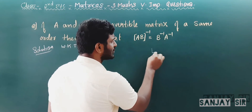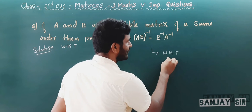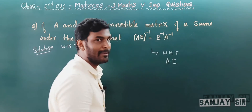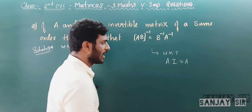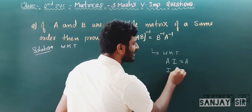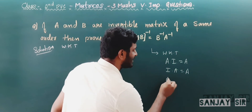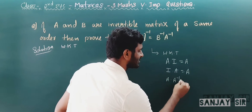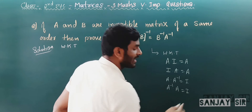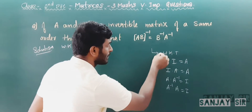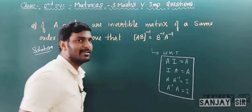Before proving this question, we need to know these conditions. If you multiply I·A or A·I, the answer is always A. And if you multiply A with A⁻¹, the answer is always I; similarly A⁻¹·A = I, where I is the identity matrix. Knowing these three or four conditions, we can easily prove this question.